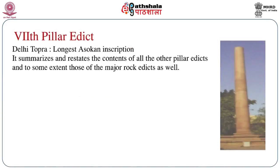Among the pillar edicts, the seventh pillar edict is the longest one — the Delhi Topra edict, which is the longest Ashokan inscription. It summarizes and restates the contents of all the other pillar edicts and, to some extent, those of the major rock edicts as well. Since the pillar edicts were the last to be promulgated, you almost get the summary of all the major inscriptions of Ashoka in the seventh pillar edict.